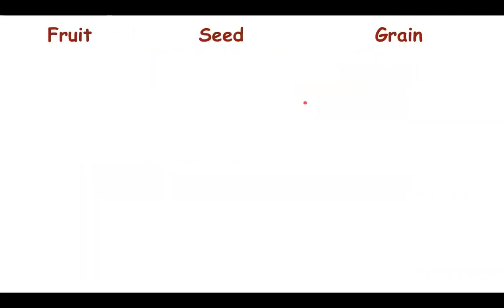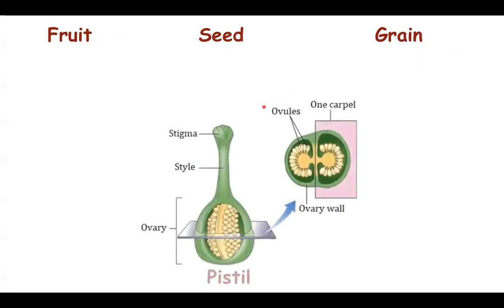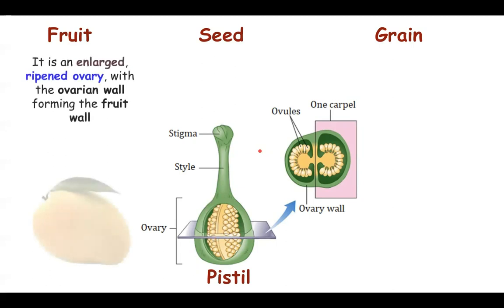The three terms you need to be aware of before you start with the topic seed are: fruit, seed, and grain. In a pistil or carpel, the ovary part which houses the ovules — it is this ovary which on ripening will change into a fruit, and the ovules on ripening will change into the seeds.